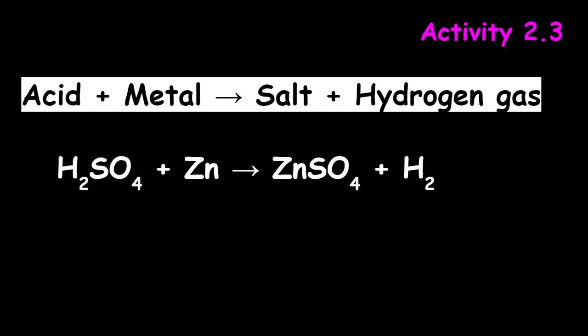Then we have to add some zinc granules. So our metal will be Zn. So Zn plus H2SO4 gives ZnSO4 plus hydrogen gas. So that is the chemical equation for this activity.